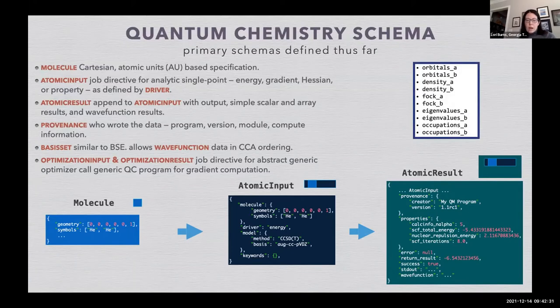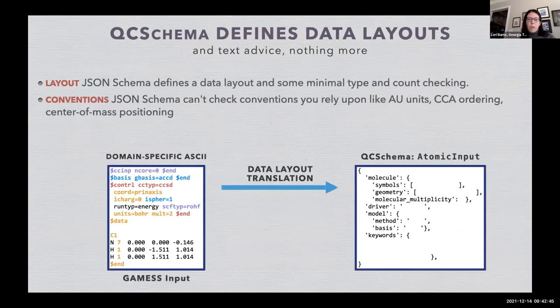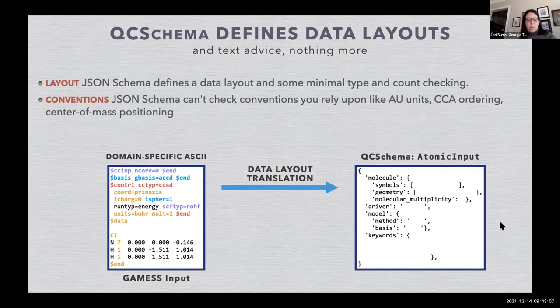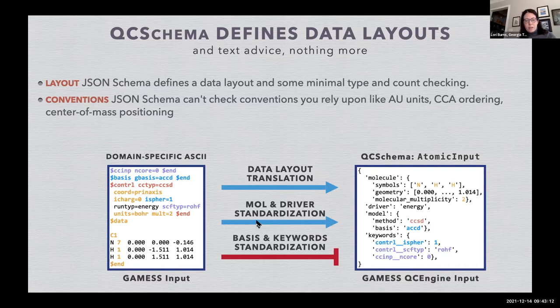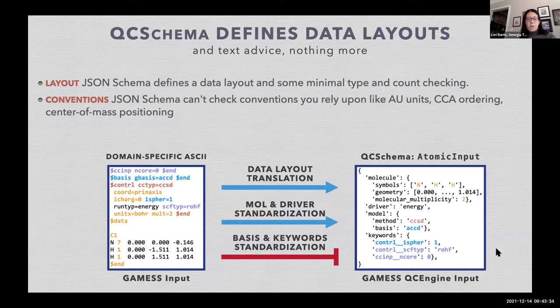Atomic results can in turn then become a component of an optimization result, the result from a geometry optimization. So this is entirely a composable setup. It's important to note that QC schema defines data layout only. If you were to take this input from a quantum chemistry program, the only thing that the schema really absolutely nails down is sort of the left-hand side of this, where you put all the data and what general form it should have. The rest of it, the molecule and driver, does tend to be standardized. So the driver becomes the energy and you simply fill in what is known from the domain-specific language of the quantum chemistry input into all the slots on the right-hand side of the input for QC engine. So this is GAMESS QC engine input, but you can't check a lot of conventions or anything.